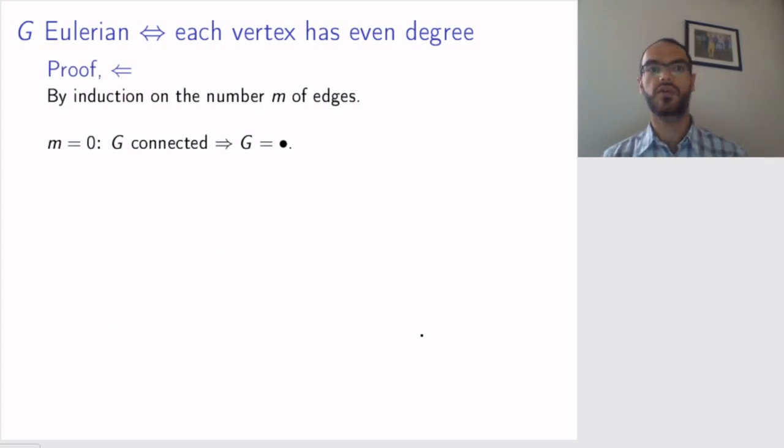Now let's show the other direction. And we'll do that by induction on the number of edges. So we want to show that a graph with m edges, where each vertex has even degree, is Eulerian. Let's start by the base case.